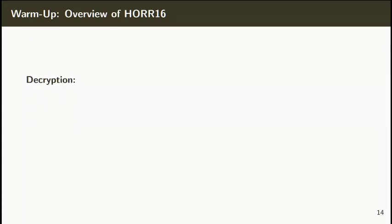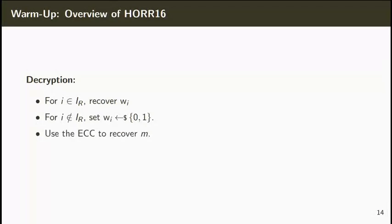To decrypt a message, we note that the receiver has the secret key for the positions in IR, so it can recover the true encrypted value WI. For the remaining positions, the receiver sets WI to be a uniformly random bit. We can then use the error correcting code to recover the message M. Correctness holds because the intersection between the subsets IS and IR is non-empty except with negligible probability. Thus, the number of errors will be slightly smaller than one half and decoding succeeds.